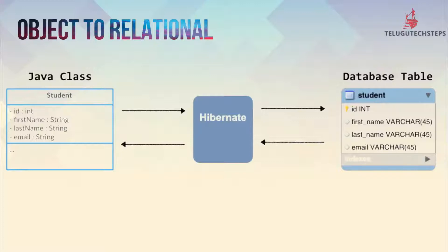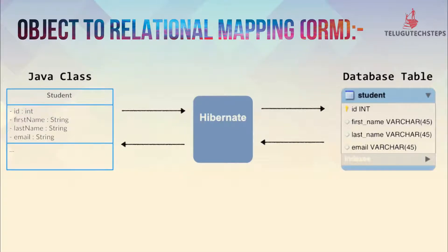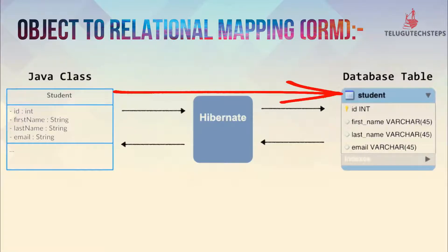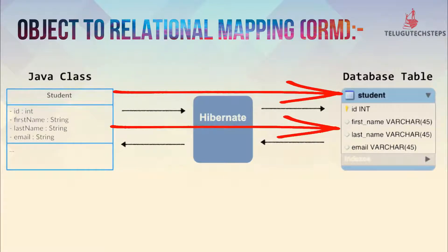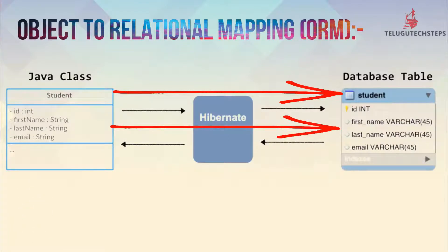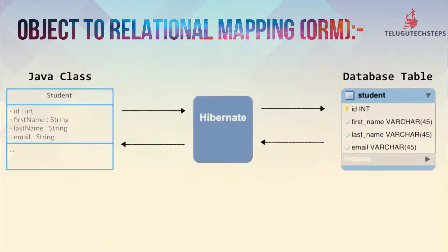This is the information regarding @Entity. You can see object-to-relational mapping, which is ORM. Here you have a Java class with Hibernate, and on the right side you can see the database table. This is the Java class mapped with the database table — with fields like first name, last name, and email matching the database table. This is how Hibernate maps these two things: a Java class and a database table.